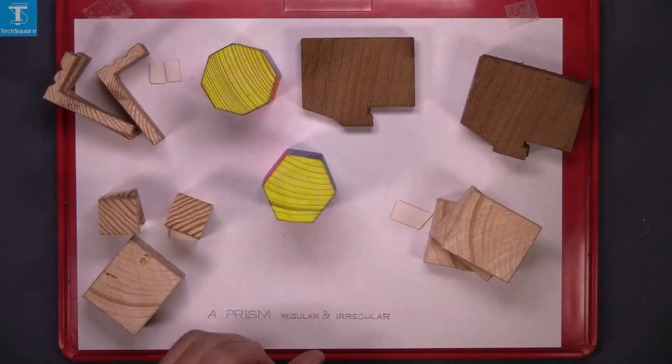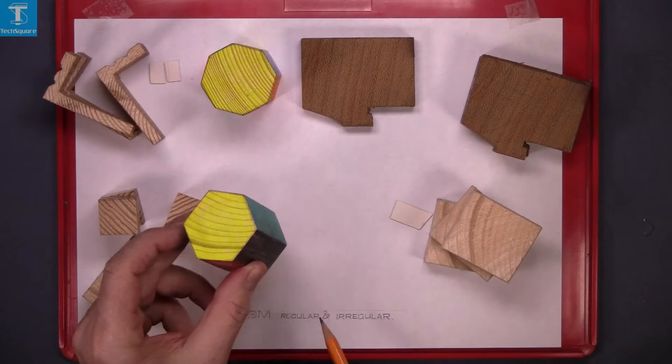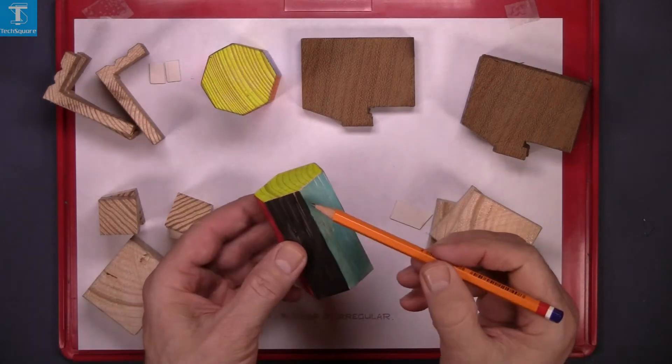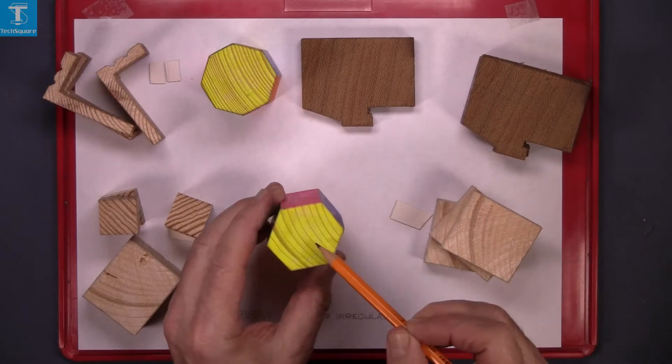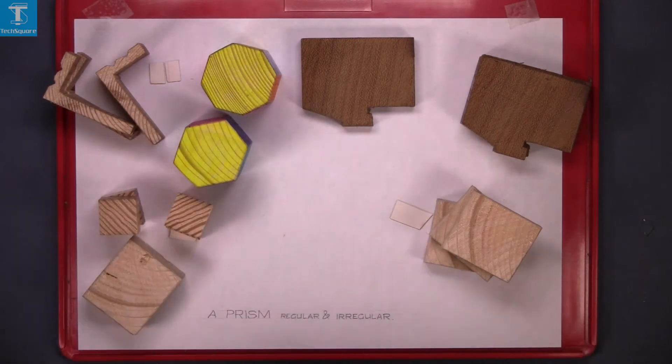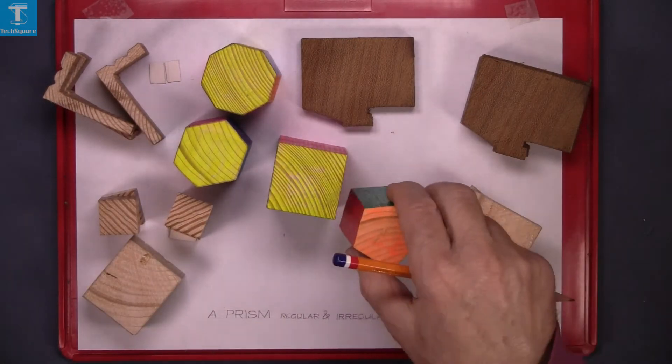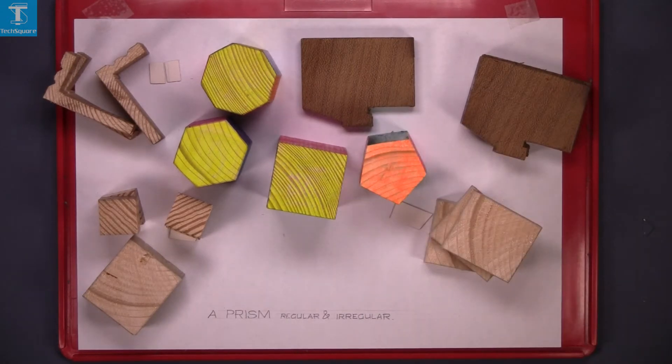This is a hexagonal prism, a regular hexagonal prism. The shape is the same the full length of its axis. And that's a square based prism and a pentagonal prism.